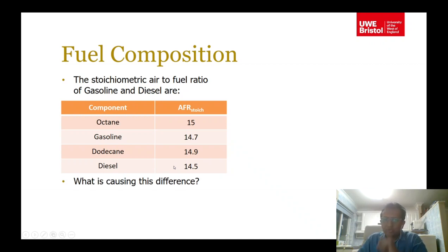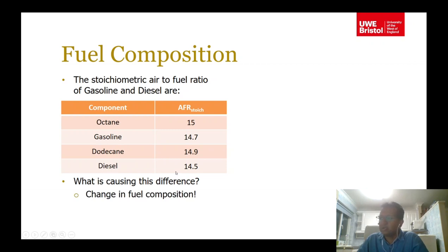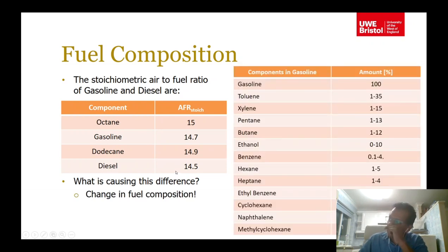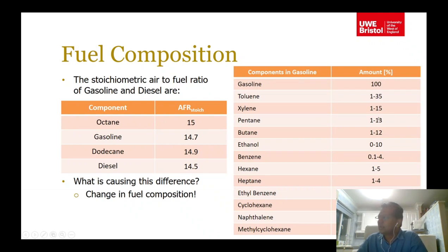This difference in air-fuel ratios between fuels is caused by the change in fuel composition. Gasoline, for example, is composed of components such as toluene and others, each with slightly different hydrogen-to-carbon ratios.